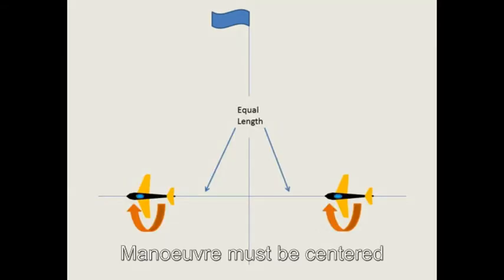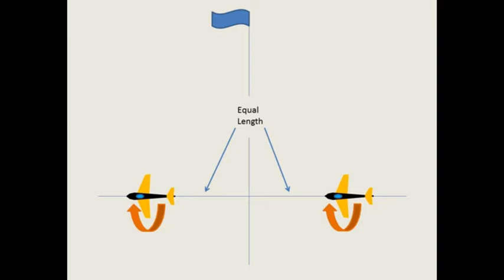But, the manoeuvre must be centred, which means there must be an equal length of straight line before and after the centre line. The rolls must be exactly 180 degrees each, and the wings must be level during inverted flight.